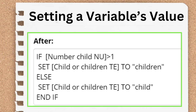The next example is writing a condition that will set the correct form of a noun — either the singular or the plural form — based on the end user's answer to a question about how many of something they have. The real-world example is that you'd want to use the correct form of the word 'child' or 'children' in a subsequent question, and you're already asking the end user how many children they have. Using the variable number child and you, you evaluate whether that number is greater than 1 using the greater than evaluator symbol. On the next line you set the variable child or children TE — the variable you'll use in subsequent pages to hold the correct form of the word 'child' — to 'children' if the condition is met, or else set that same variable to 'child' because the end user only has one child.